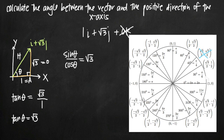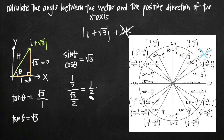The other two candidates are theta equals pi over 6 and theta equals pi over 3. Testing theta equals pi over 6: sine of pi over 6 is 1/2 and cosine of pi over 6 is square root of 3 over 2. Dividing: 1/2 multiplied by 2 over square root of 3 gives us 1 over square root of 3. That's not our square root of 3 value, so pi over 6 is not correct.